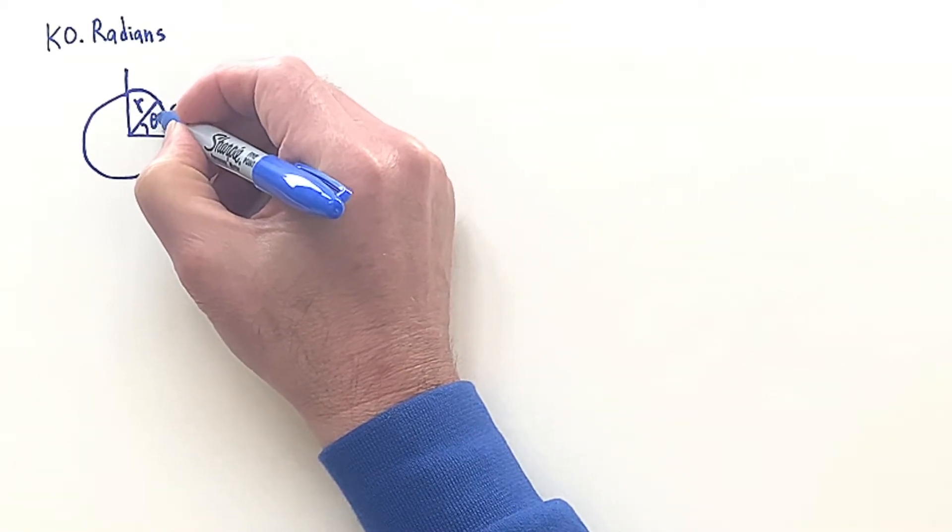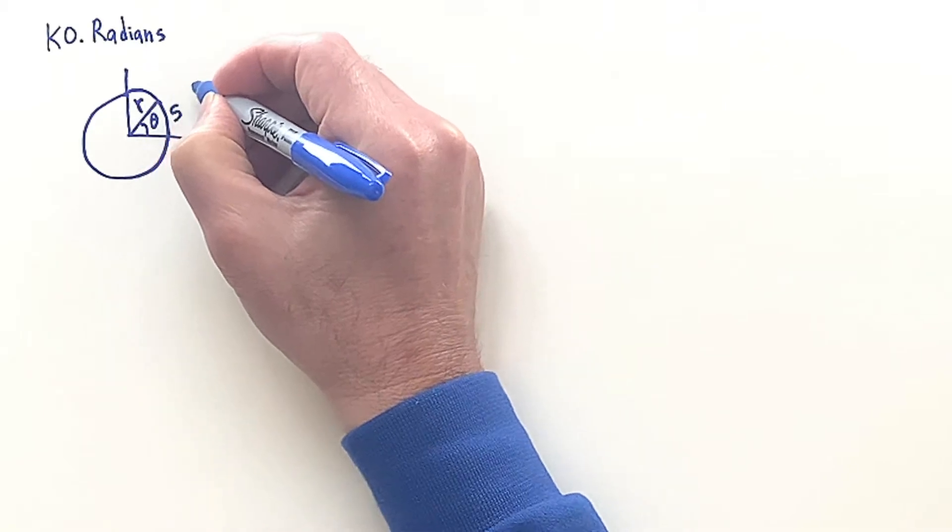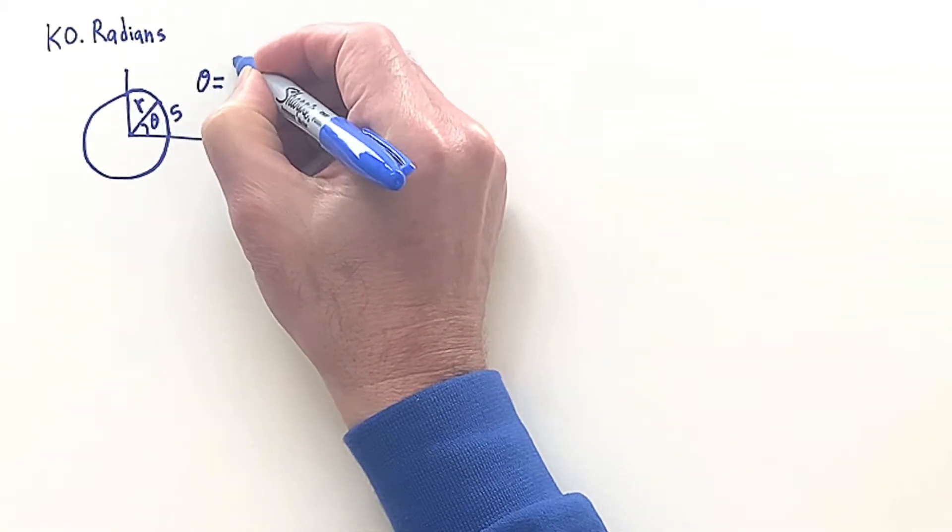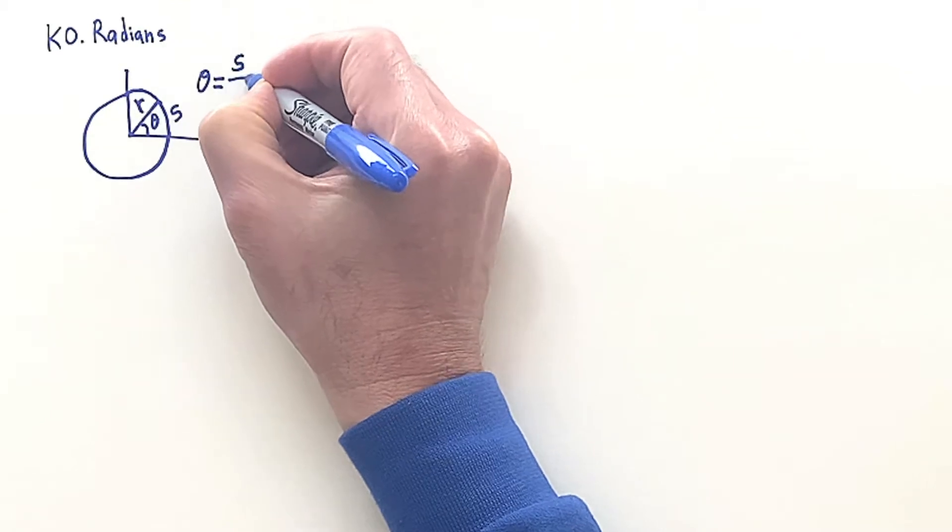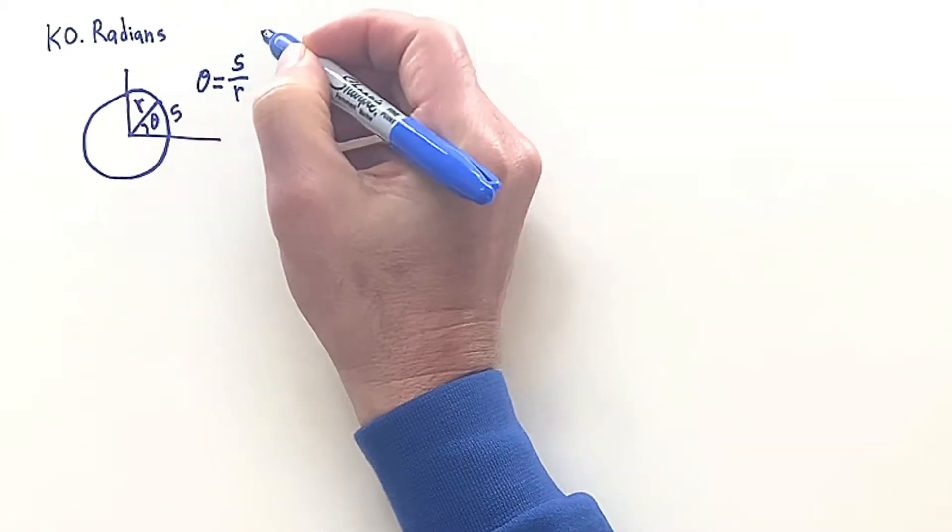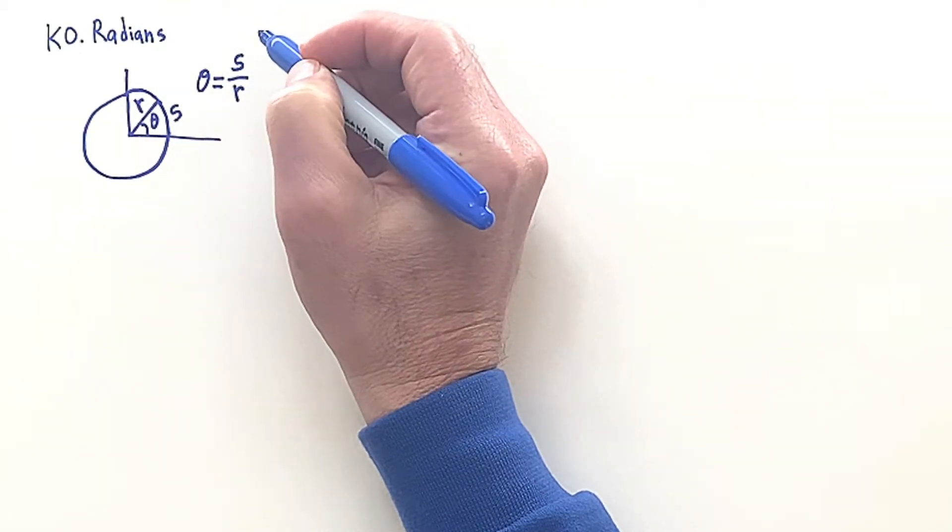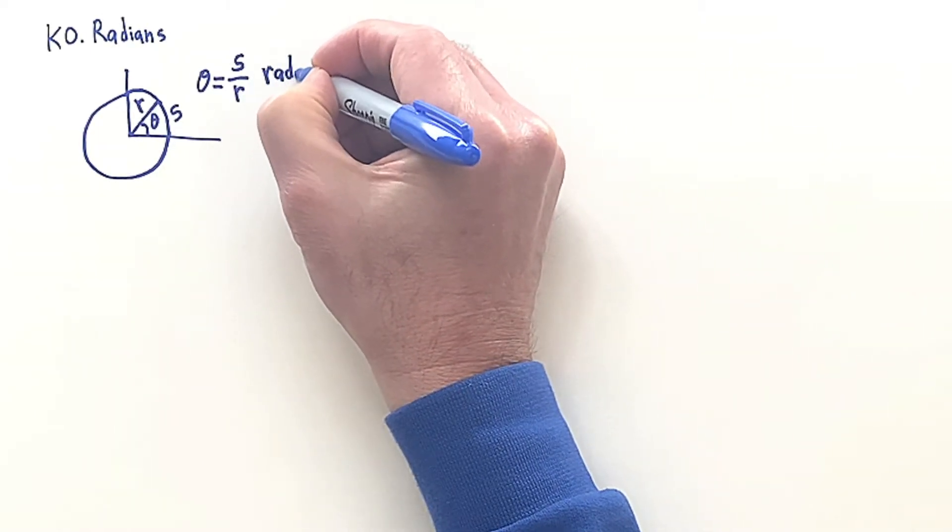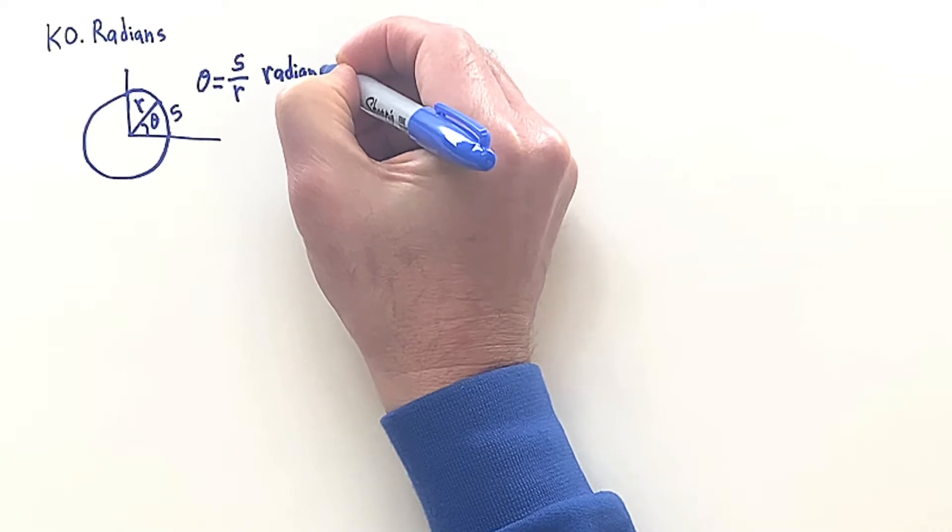Now we're going to define the angle in terms of radians by taking the ratio of the arc length with the radius. So you can think of that as a definition. With that definition, we have the angle in radians.